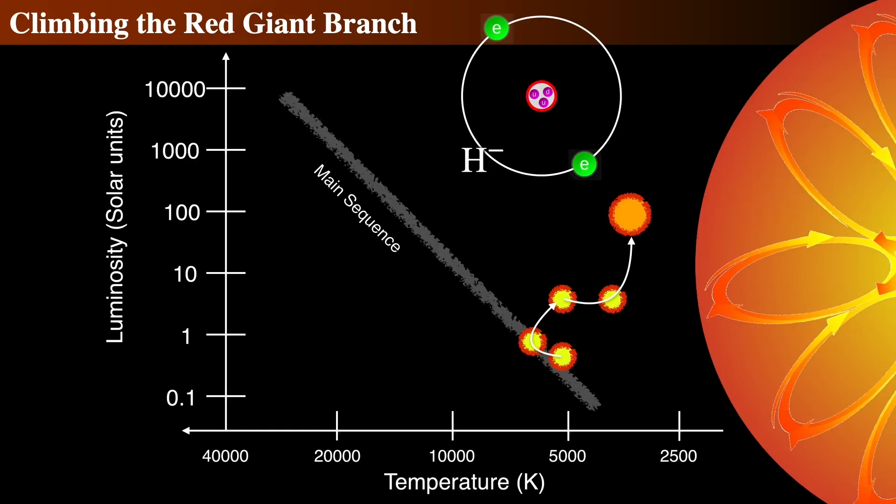This subgiant phase obviously must end. This constant luminosity, increasing radius, decreasing temperature phase ends about 250 million years later. And it does so when it starts to become a red giant.